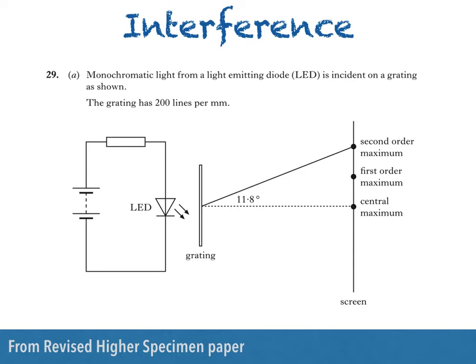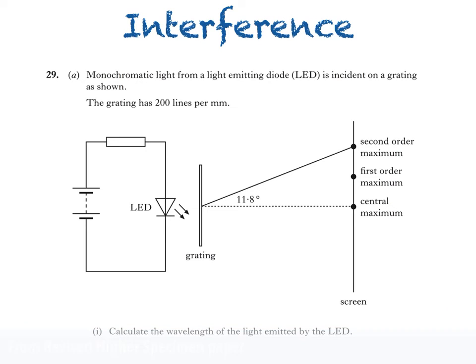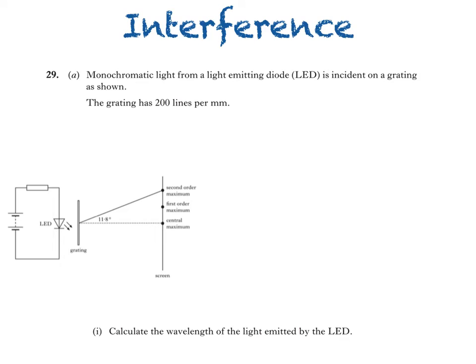We're asked in part A1 to calculate the wavelength of the light emitted by the LED. The first thing we'll do is calculate distance d between the lines in the grating. This distance should be in metres. So you should calculate the number of lines per metre by multiplying 200 lines per millimetre by 1000, giving us 200,000 lines per metre. Distance d is 1 over this number, which works out as 5 times 10 to the minus 6 metres.